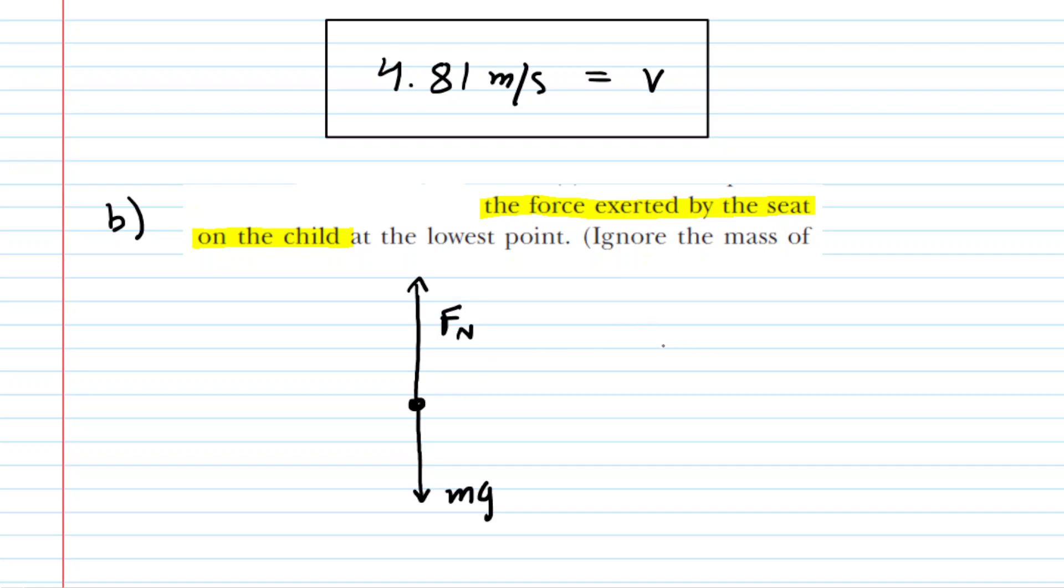And we can do that by once again saying that the sum of the forces is going to equal the mass times the centripetal acceleration. We will expand the centripetal acceleration into V-squared divided by R. The forces are twofold. We have the positive Fn, the normal force, minus Mg.